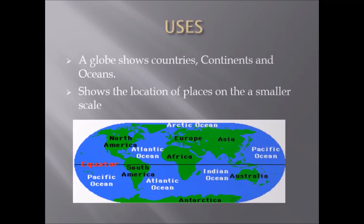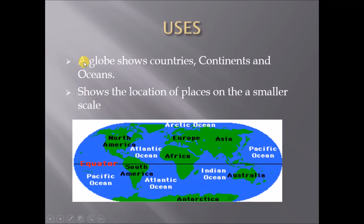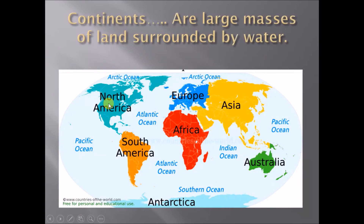What are the uses of a globe? A globe shows countries, continents, and oceans. It shows the location of places on a smaller scale. We all know what a continent is — continents are large masses of land surrounded by water.